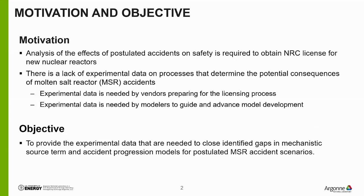Analyses of postulated accidents are required in order for a vendor to obtain a license for a new nuclear reactor from the U.S. NRC. In general, there's a lack of experimental data on the processes that determine the consequences of postulated molten salt reactor accidents. The experimental data is needed not only by MSR developers to validate models as part of the licensing process, but also to guide advanced model development and may even influence the final design of the reactor. So it's important that this experimental data is available early when the reactor design is still flexible.